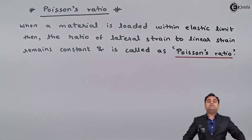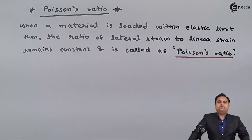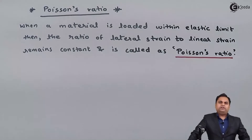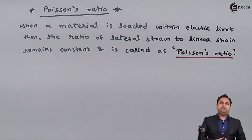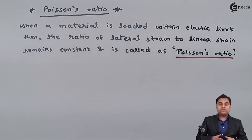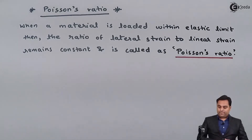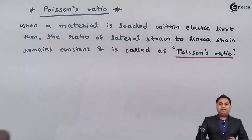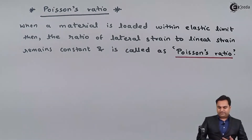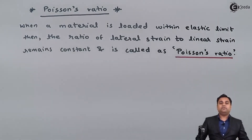So here I have written the definition of Poisson's ratio: if we have a material and when it is loaded within the elastic limit, then the ratio of lateral strain to linear strain remains constant, and that ratio is called as Poisson's ratio.